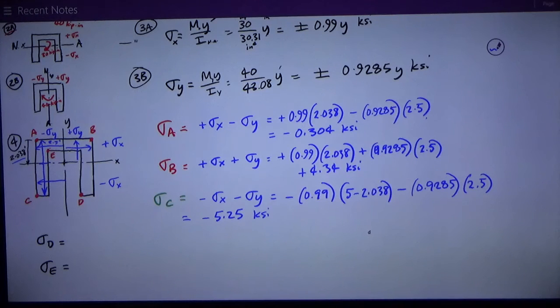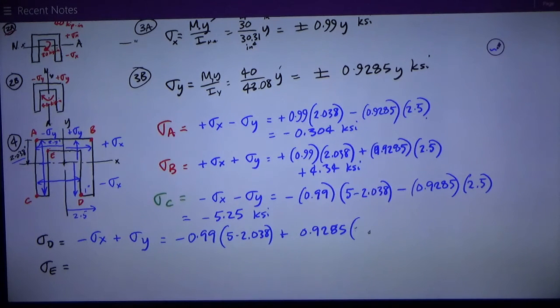At point D, down here on the right side in the inside lower corner of that leg, I have negative sigma x and positive sigma y. Sigma x, I'm concerned with that distance right there, which is that same 5 minus 2.038. So I have negative 0.99 times 5 minus 2.038 and positive 0.9285. This time I'm concerned with this horizontal distance from the neutral axis to the inside of that leg. From here out it's 2.5 and this leg is 1 inch wide. So this distance from the neutral axis is 2.5 minus 1, and you calculate those numbers and you get negative 1.60 ksi.